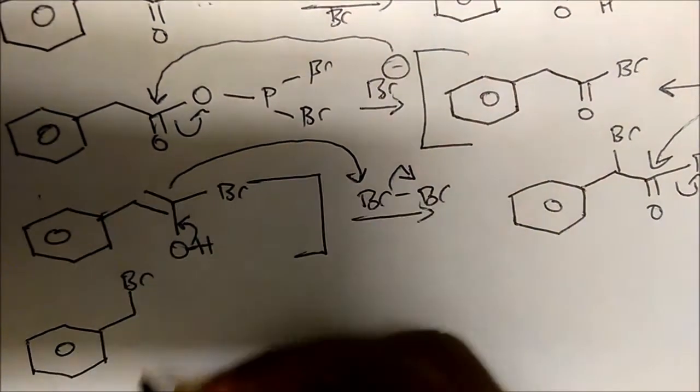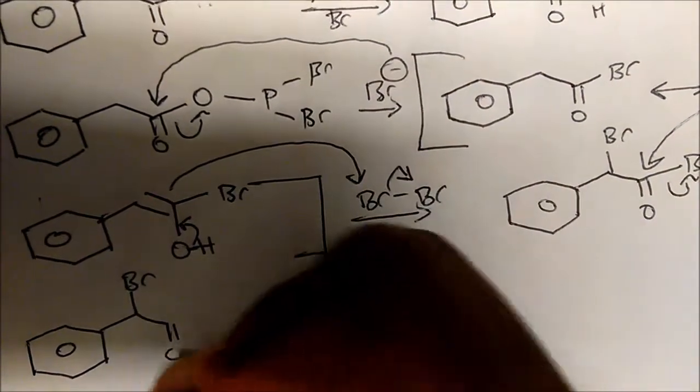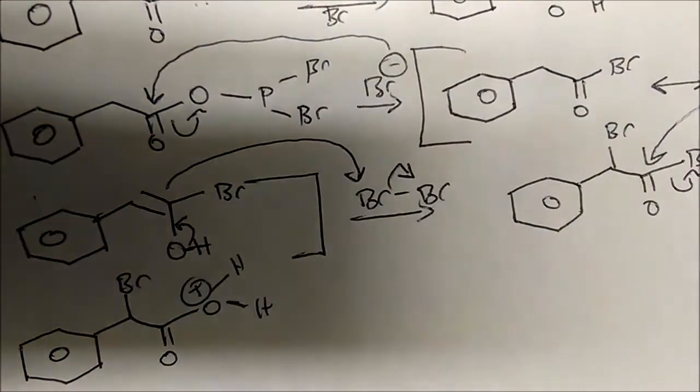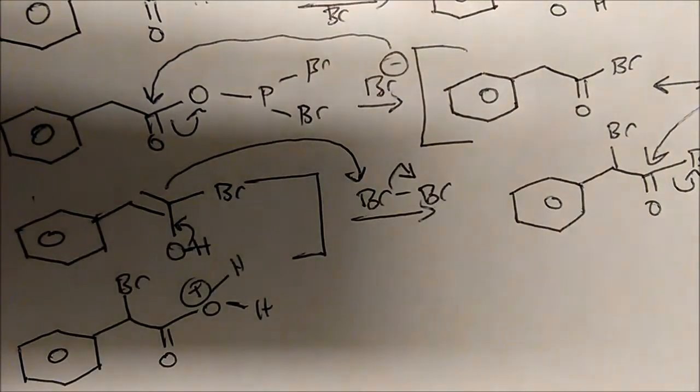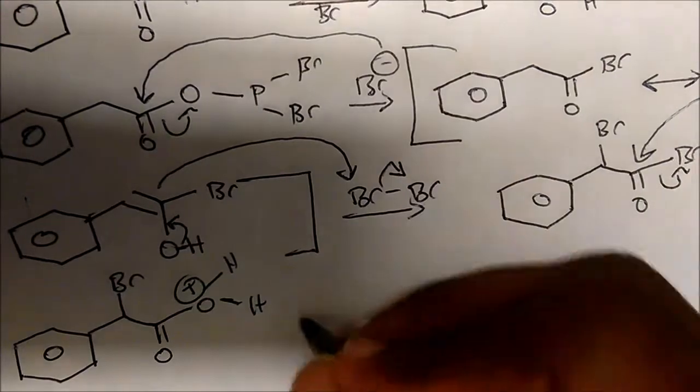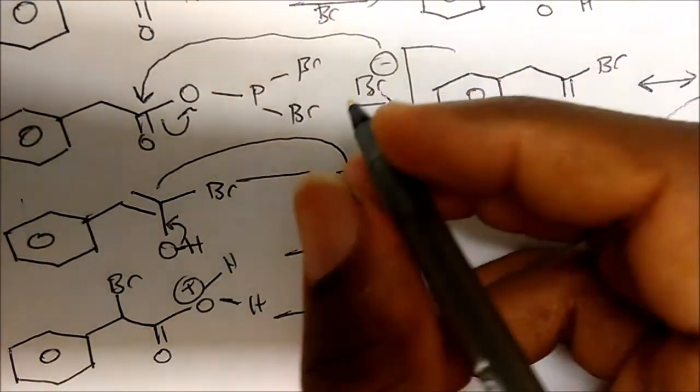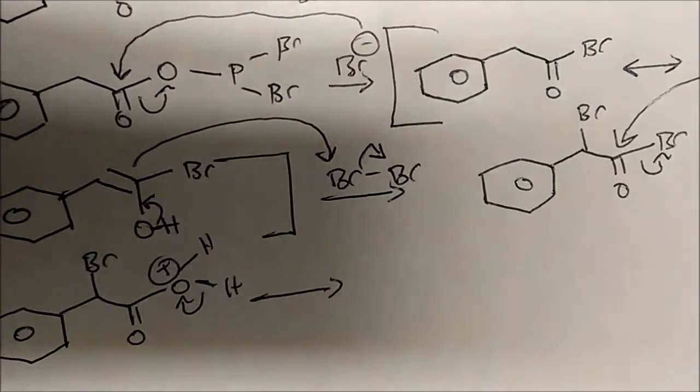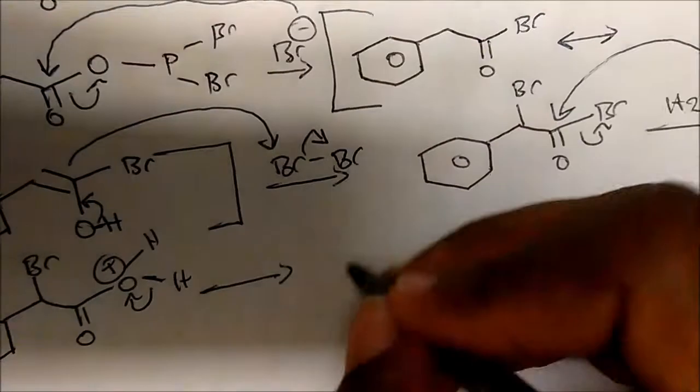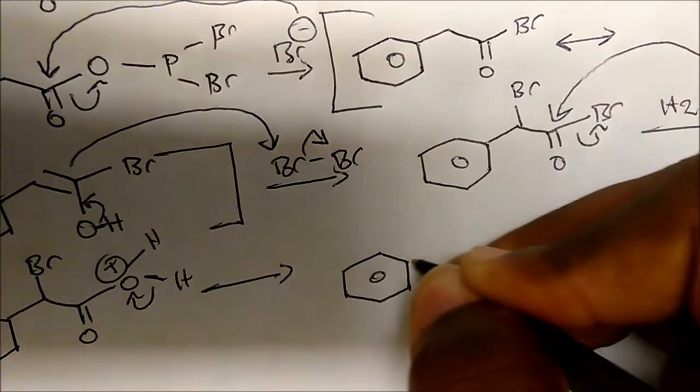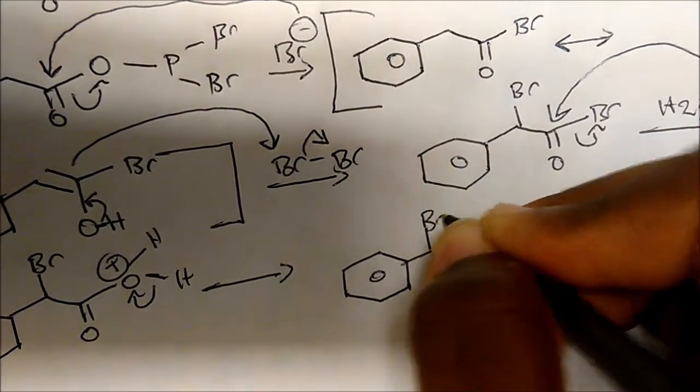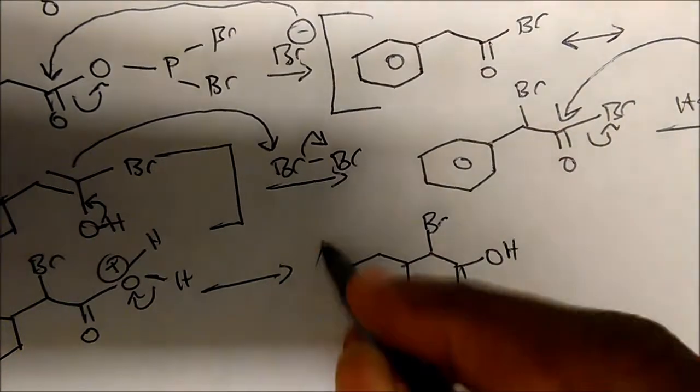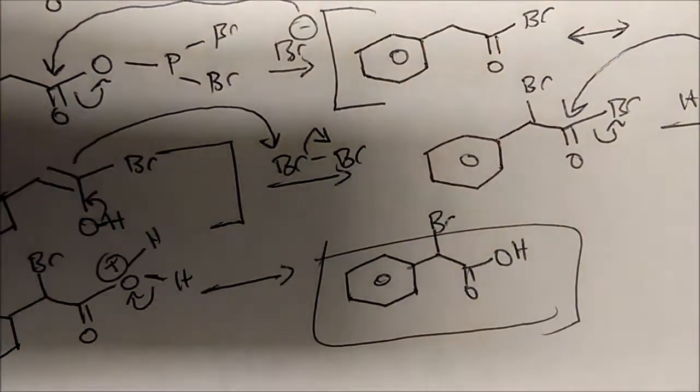There's our bromine. There's our carbonyl. Now this is bonded to an oxygen. It has two hydrogens. So oxygen, three bonds plus one formal charge. Now in the last step, this bond will break to neutralize the molecule. So once this bond breaks to neutralize the molecule, then you can see we form the carboxylic acid, which is exactly what we predicted.